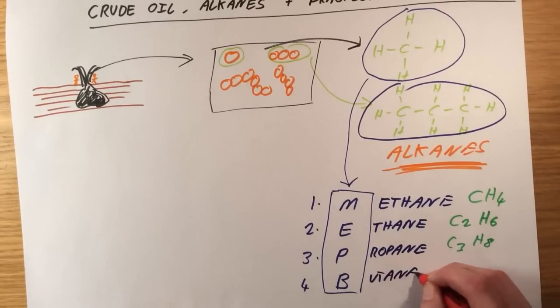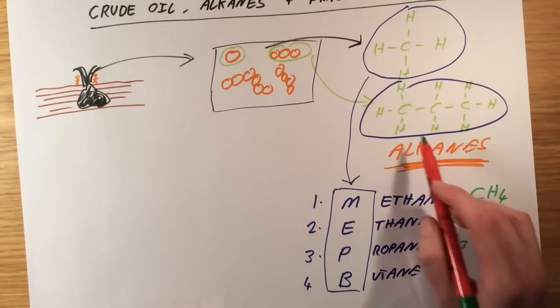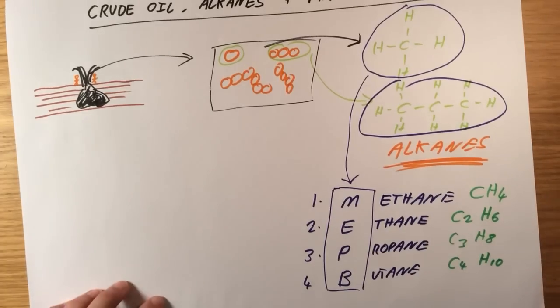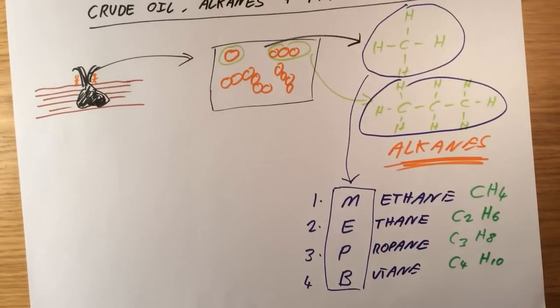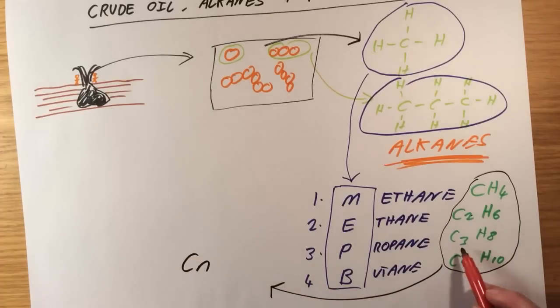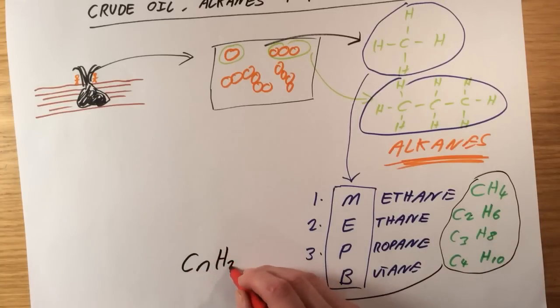And the fourth one, butane. Similar idea again, if you were to draw this out, making sure all the bonds are single, you would find it would have C4H10. And there is a pattern between all of these different substances. So if we look at our formula here, we can come up with what we call a general formula. So how do I get from the number of carbon atoms to the number of hydrogens? Well, let's call the number of carbon atoms N. And what you will spot is that for each of these, the number of hydrogen atoms is simply double the number of carbon atoms, and then plus two. I can represent that as a general formula, CnH2N plus two.